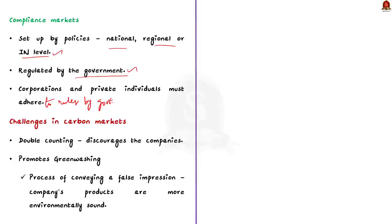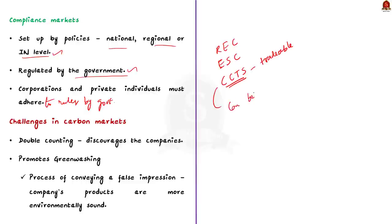India already has two certificates related to climate change: renewable energy certificates and energy saving certificates. The Energy Conservation Bill 2022 empowers the center to specify a carbon credits trading scheme. These new carbon credit certificates will be of a tradable nature. Under the bill, the central government or an authorized agency will be able to issue carbon credit certificates.